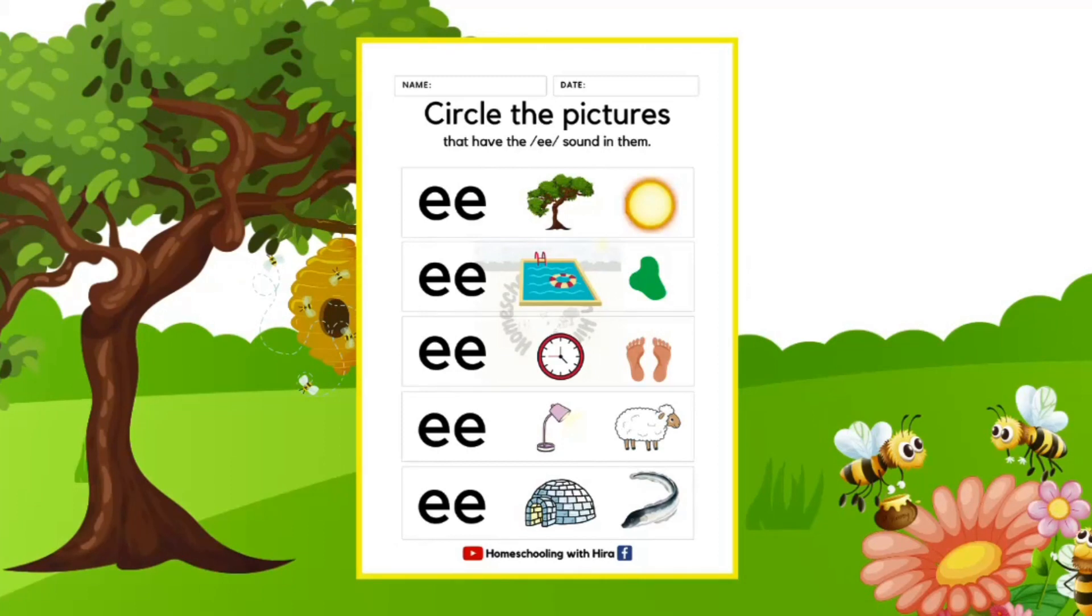So can you tell me what do we need to do in this worksheet? Yeah. In this worksheet, we need to circle the pictures in which we hear E sound and leave the others. Right? So let's do it with me, or if you want to pause the video and do it yourself, go ahead.